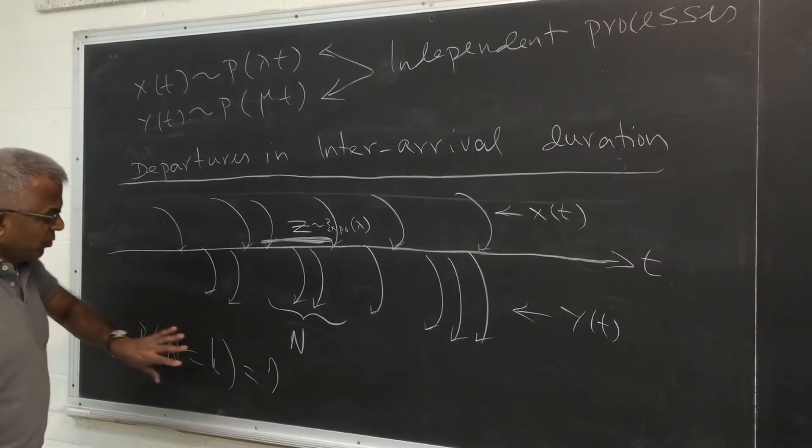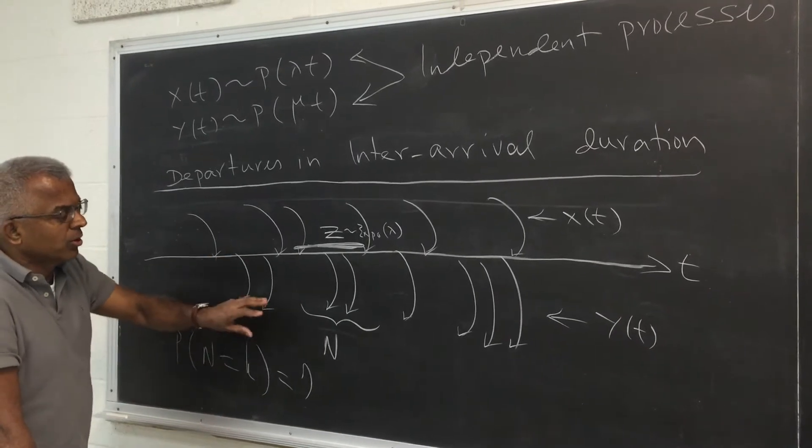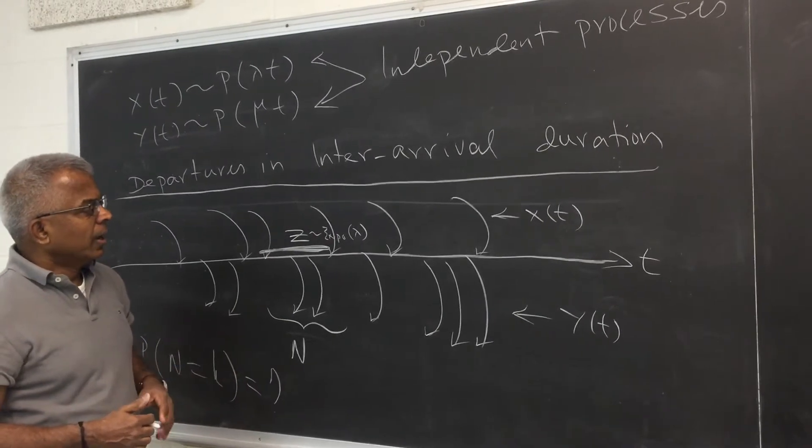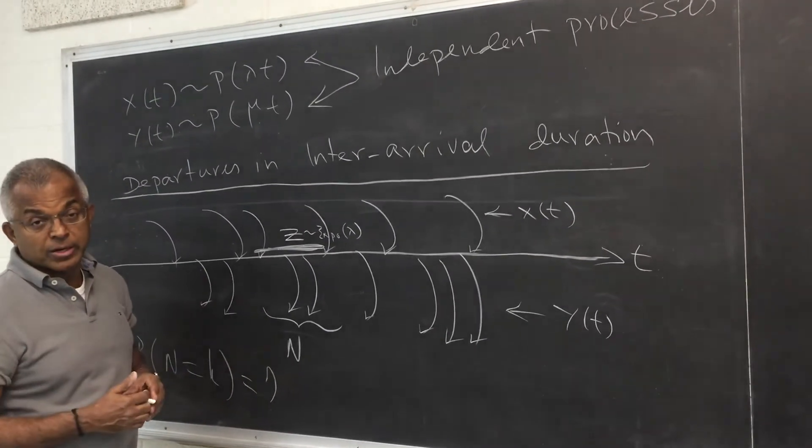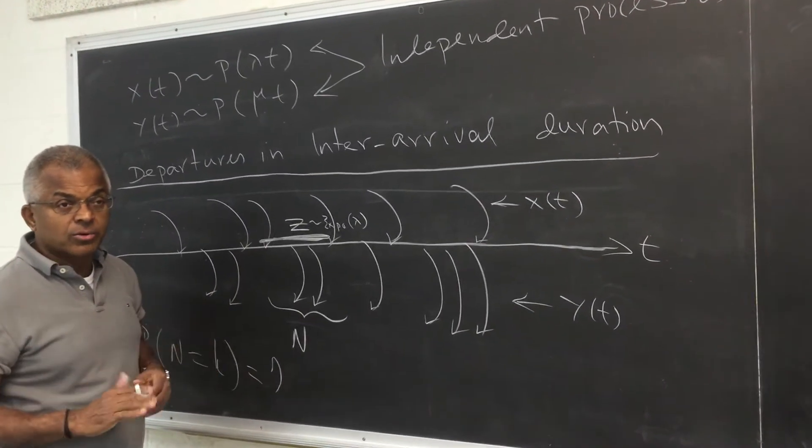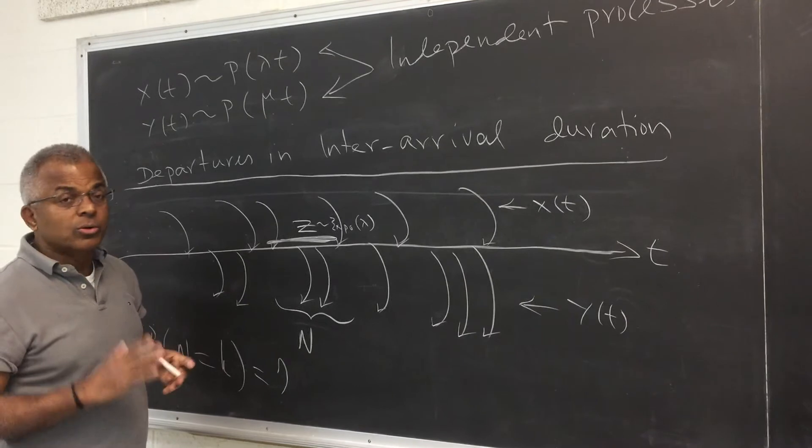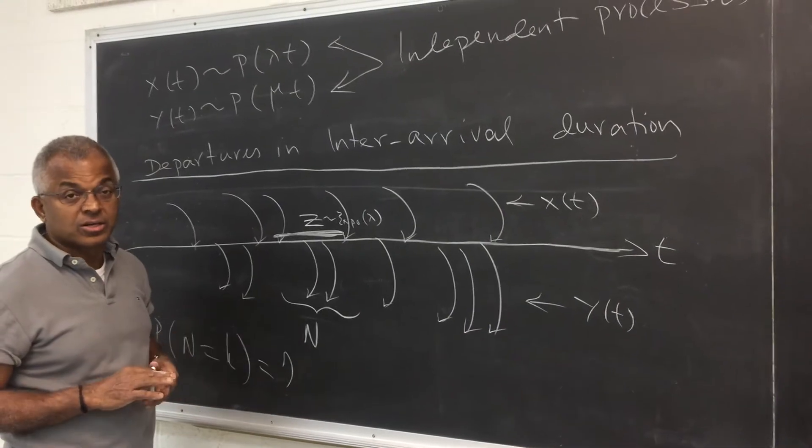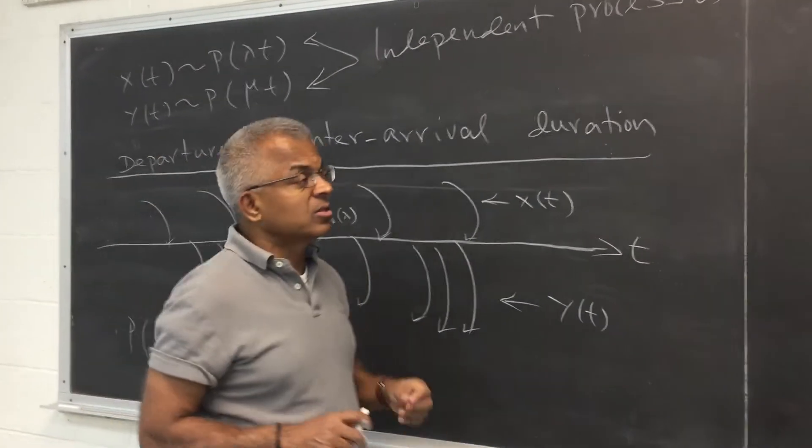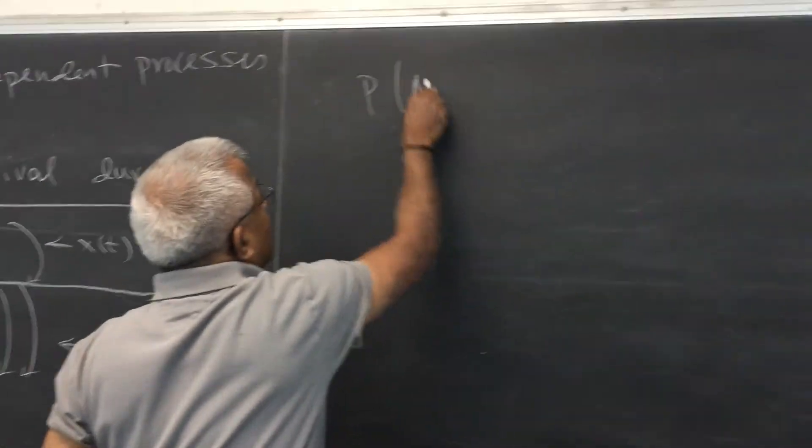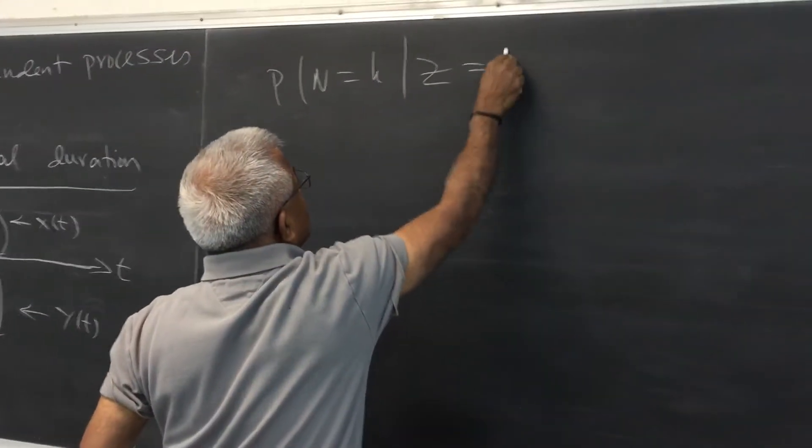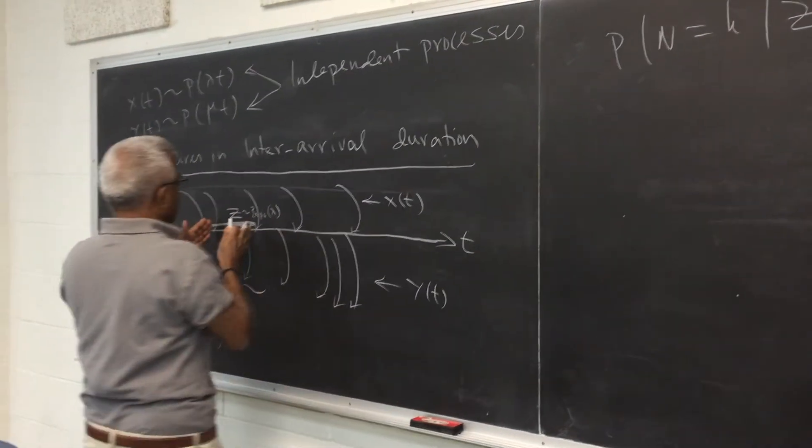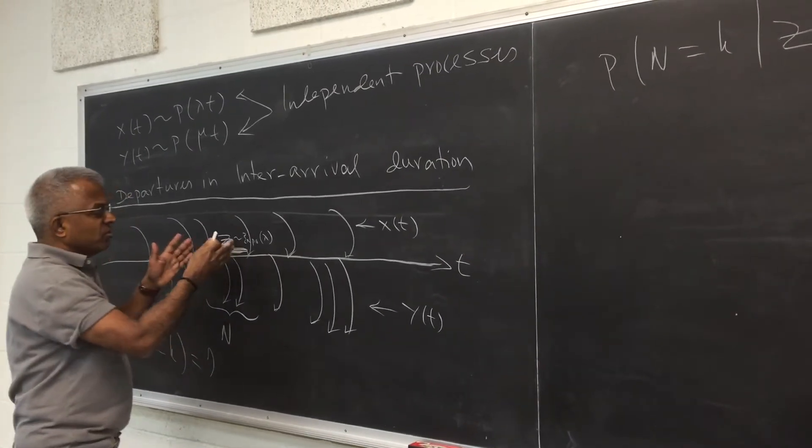So if you try to address this directly, there are too many things going on. Because if this is random, then we have another random process y of t. And so randomness over randomness. So in such cases, it's a good idea to get hold of one step at a time. So obviously conditional density functions and conditional distributions will be useful. So we can ask the simpler question, what is the probability of n equal to k given that z is some fixed duration tau. So we are fixing this random variable z to be tau.